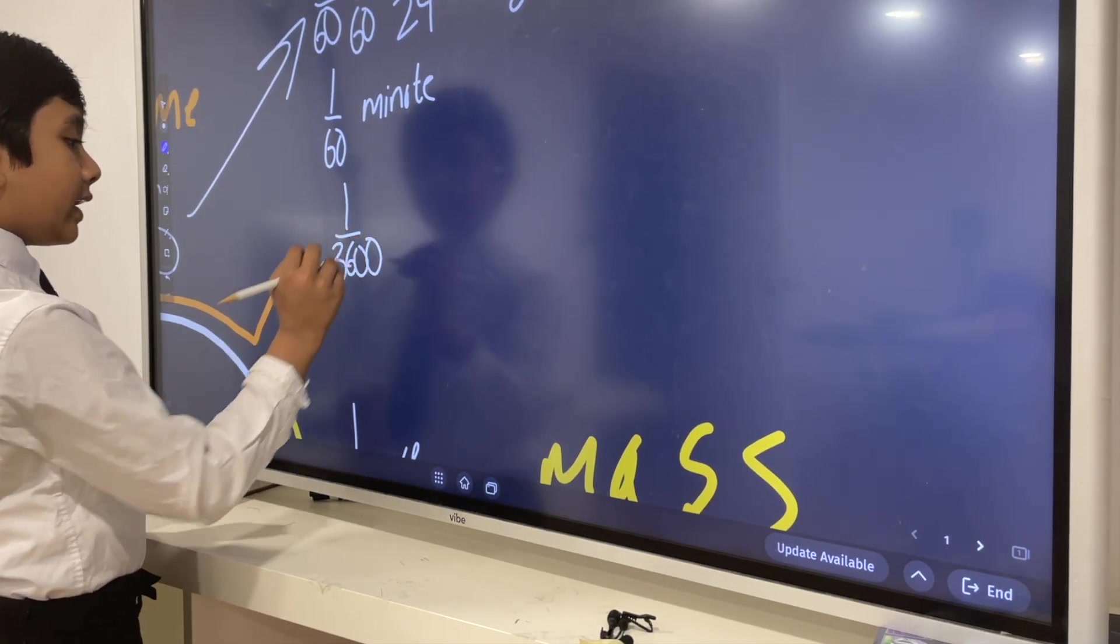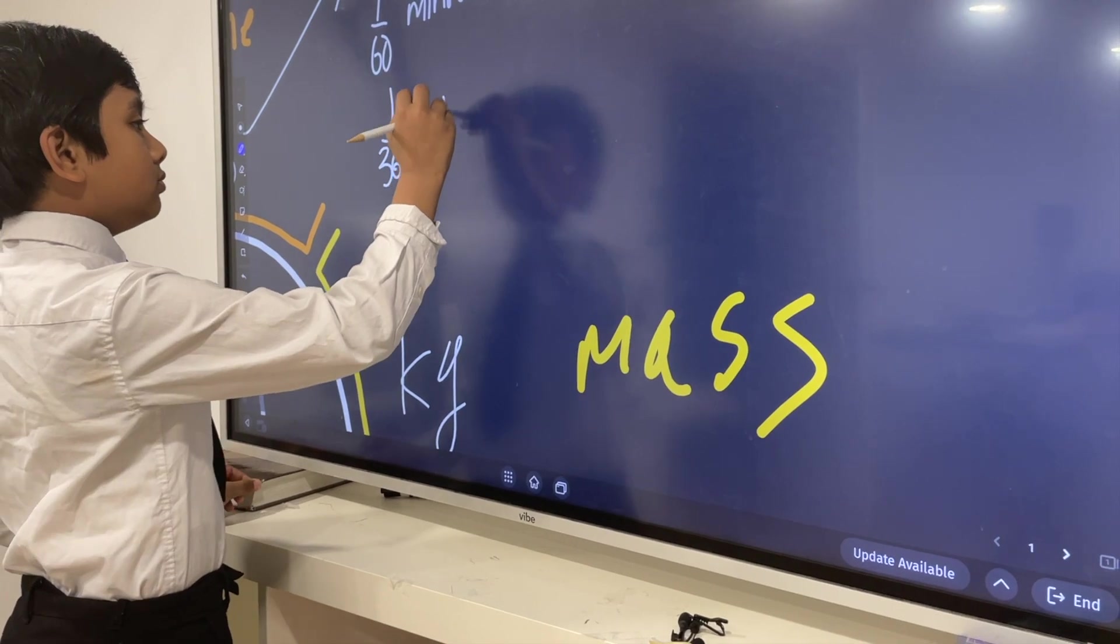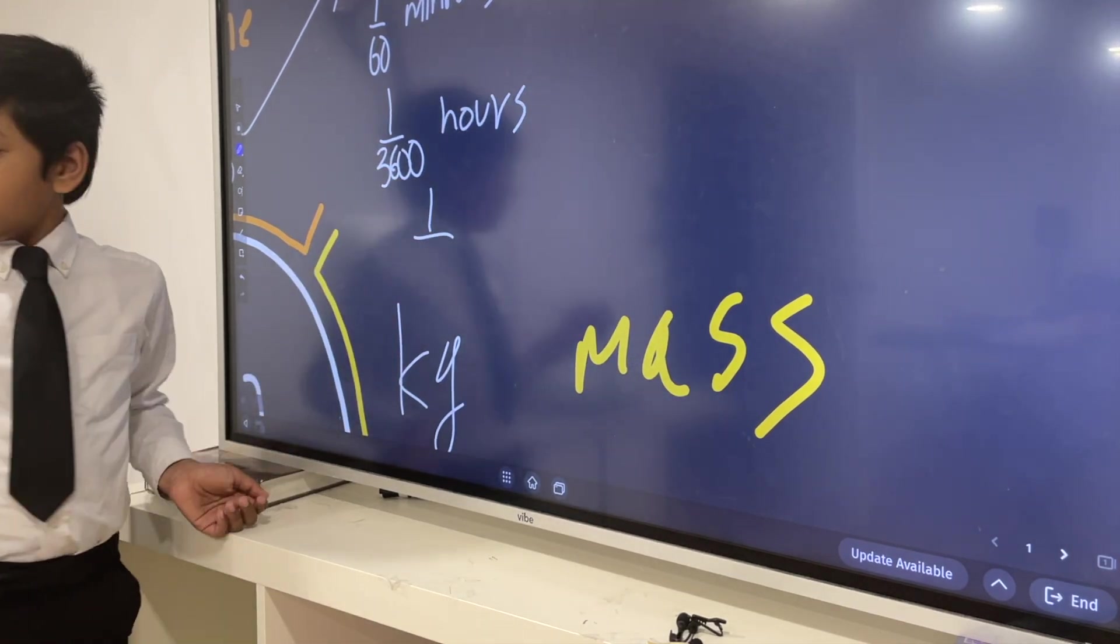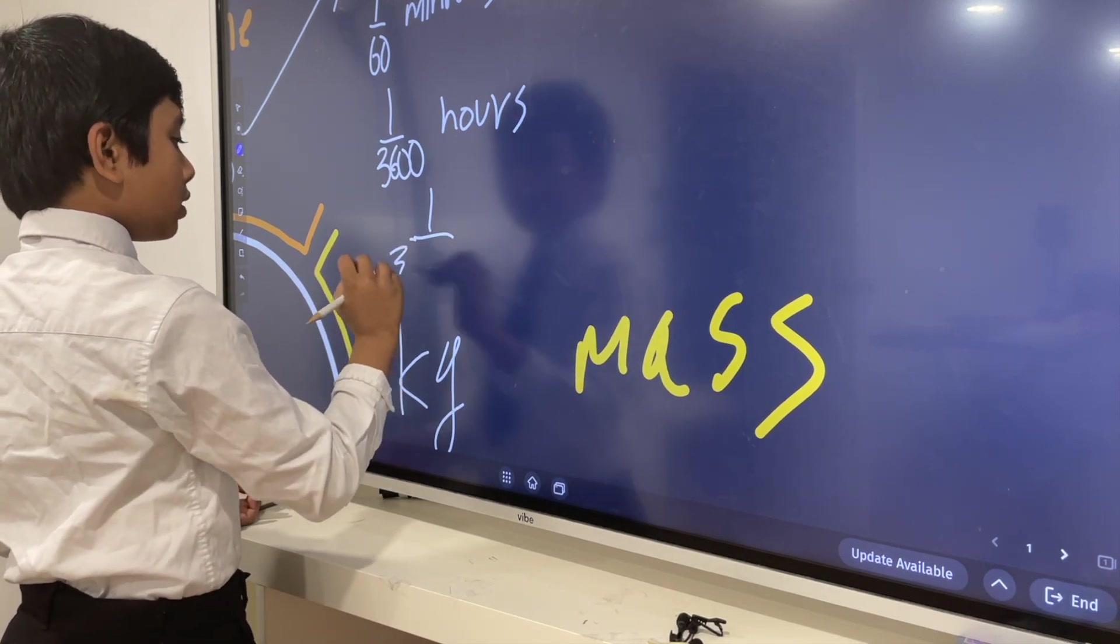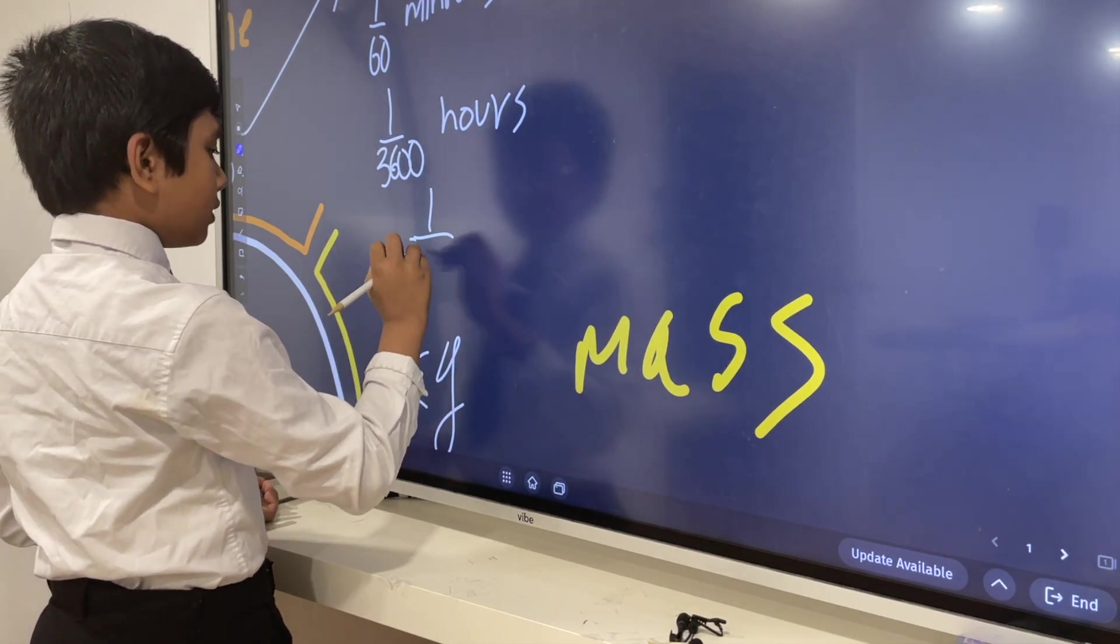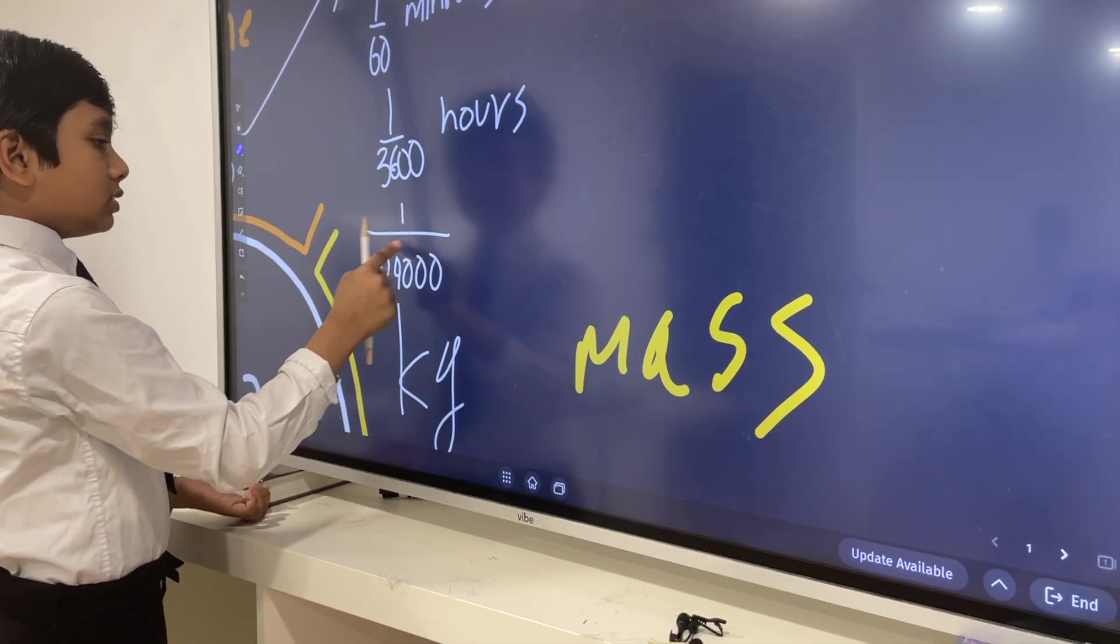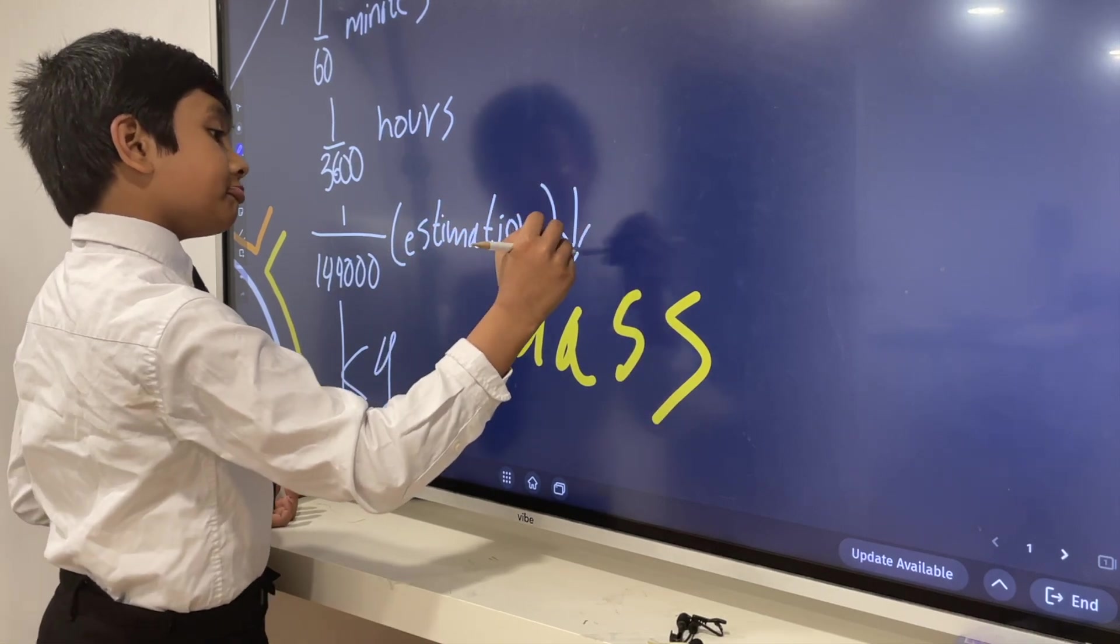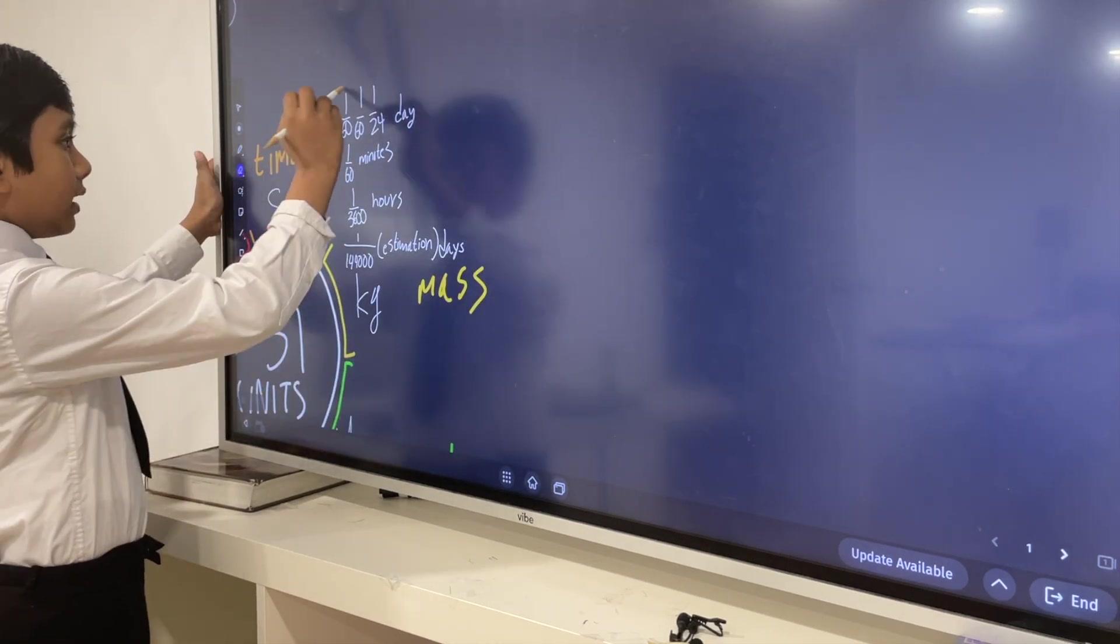So you could define it as a second is 1 over 3600 hours, and then you have 1 over 3600 times 24 days, which is a pretty large number. I believe it's somewhere around 1440, so would that be somewhere like this? Something like this, I believe. So this is just an estimation phase. Now, that's what a second was.